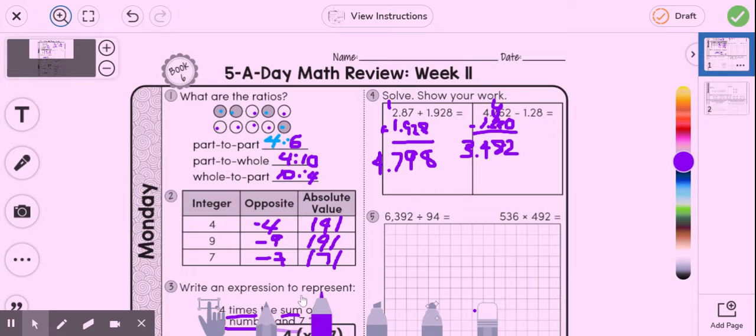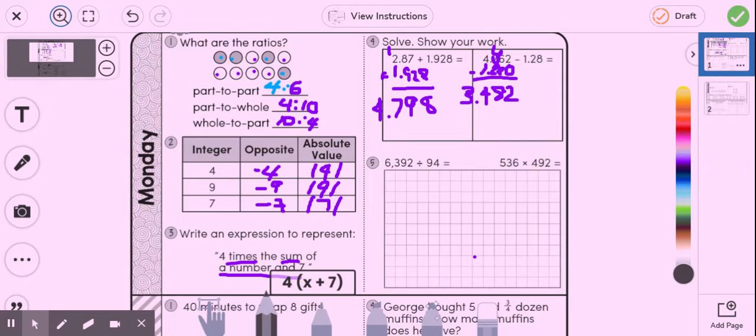All right, number five. Number five, I am dividing first. So I have 6,392 and I'm going to be dividing that by 94. Okay. So 94 goes into 639 six times. Six times four is 24. And then six times nine is 54, plus two is 56.